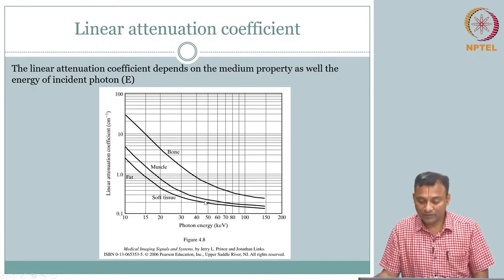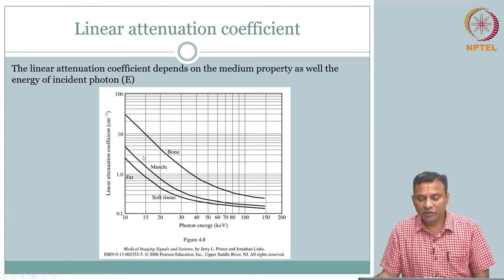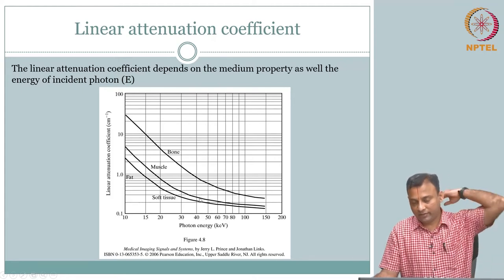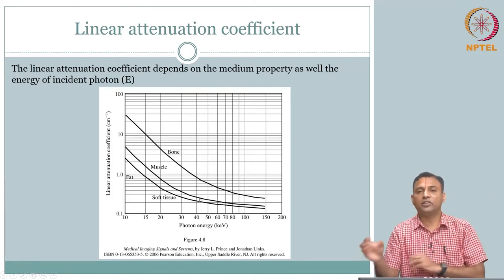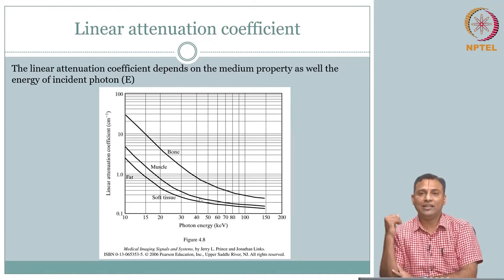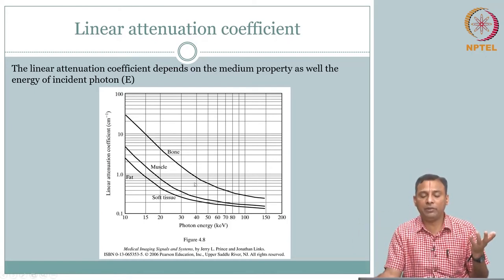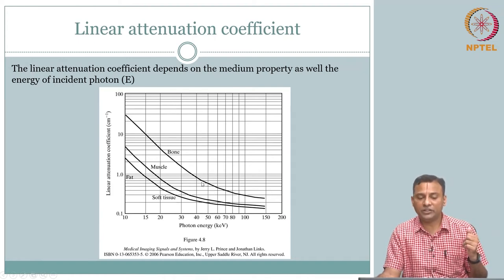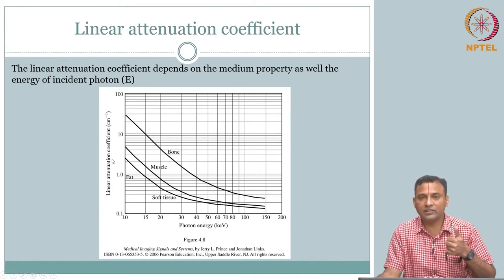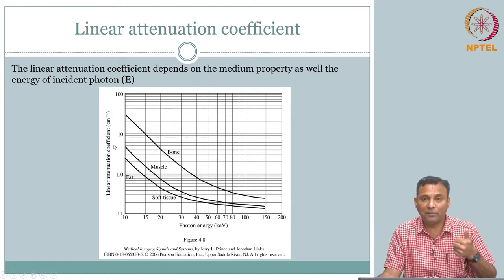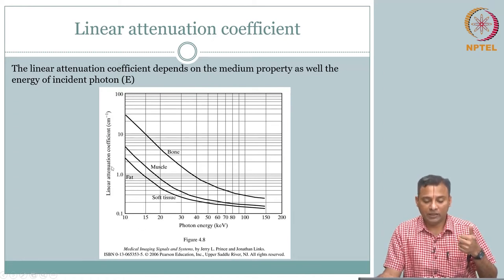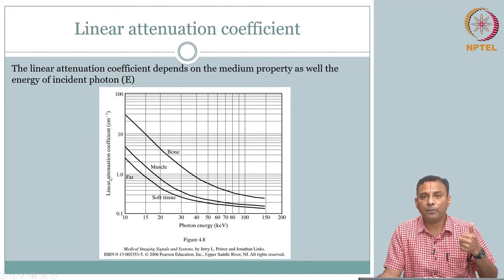Whereas if it is too large — high energy — the attenuation will be less, so you can get photons through by transmission. But there will be minimal interaction, so you would not really be able to interrogate and differentiate between the different tissues. The take-home message from this slide is very powerful: mu is a function of energy.